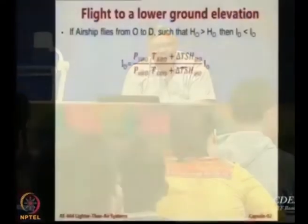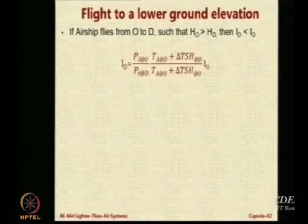So if an airship is designed to operate from Pune and to go only to some height, you bring it to Mumbai — it cannot land because when it wants to come below, you will lose gas. One way is to expel some gas. It is important: if an airship flies from a location O to a location D such that the height of origin is more than the height of destination, then the inflation fraction at destination ID is going to be lower than the fraction at origin IO.